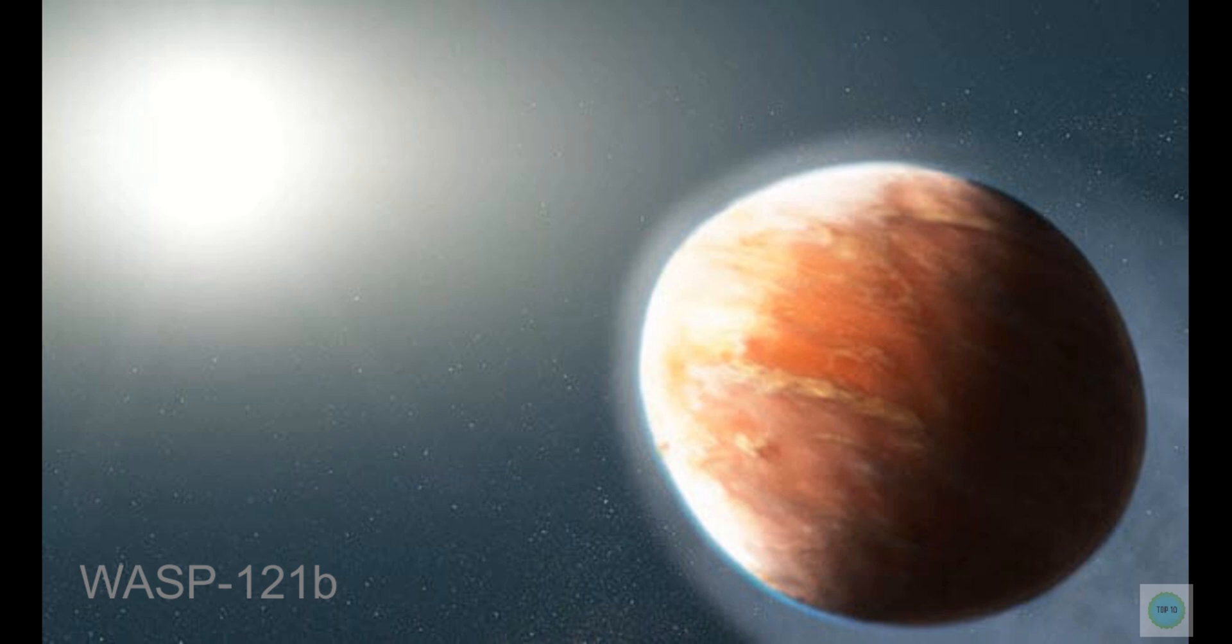WASP-121b is so close to its star that temperatures float around 2,540 degrees Celsius. Solid or liquid objects can't form there, and everything just stays in a gaseous state. This includes its metallic atmosphere, which is filled with iron and magnesium gases. Worse, the exoplanet is losing this atmosphere to its star, much the same as KELT 9b.